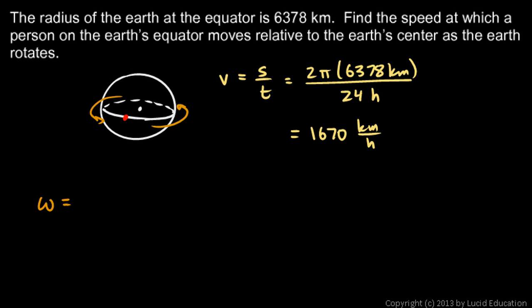Okay, the angular speed is going to be the angle, how much rotation per time. And we know there's one complete lap, so that's 2π radians in 24 hours. So we divide 2π by 24, and we get .2618 radians per hour. That's how much the earth rotates per hour. It rotates through .2618 radians.